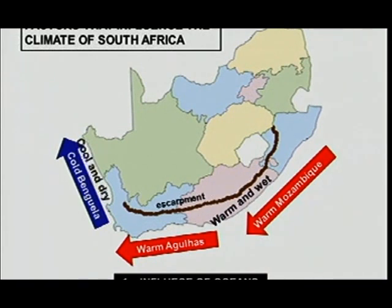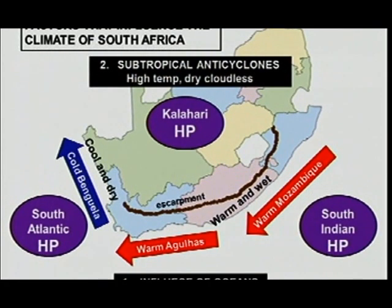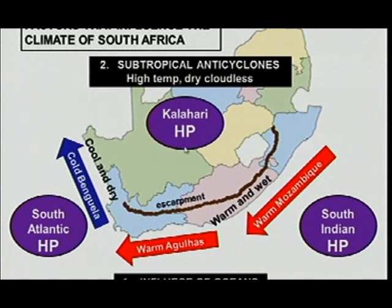Because you've got warm water on the eastern side, it will be warm and wet there, and on the western side it will be cold and dry. The second thing you must know is your subtropical anticyclones. There are three of them influencing the climate of South Africa: the South Atlantic high pressure, the South Indian high pressure, and the Kalahari high pressure.